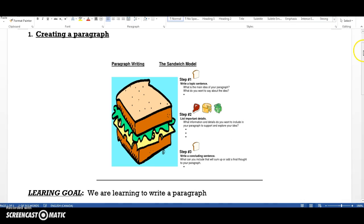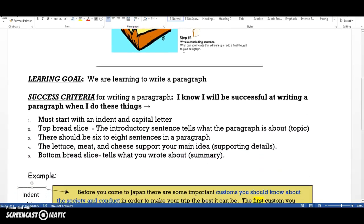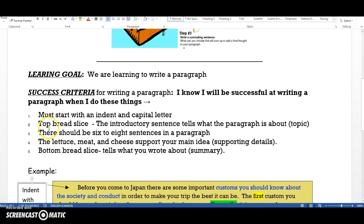If you look down here, you see the same success criteria. The top slice of bread has the introductory sentence that tells what the paragraph is about, or the topic. The lettuce, meat, and cheese support your main idea, or the body. The bottom bread slice tells what you wrote about. This is like a summary.